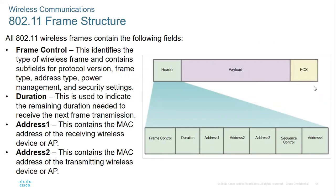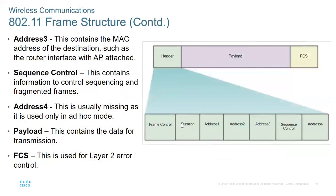This is the frame of a wireless LAN. In the header we have three addresses, frame control, duration, sequence control, and a fourth address. The payload carries the actual information to be transmitted, and the FCS checks for errors in the frame.